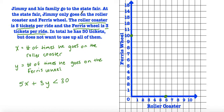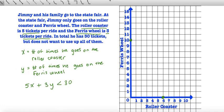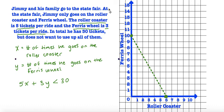Because we have a less than sign, we are going to use a dashed line. So here we have our dotted line, and what this dotted line represents is that any coordinate on this line will not be a solution, because our sign is less than.